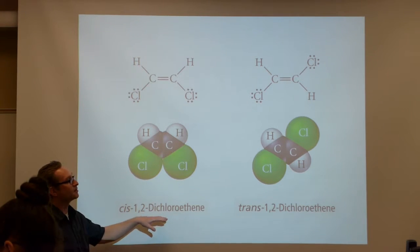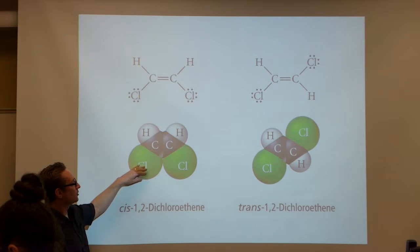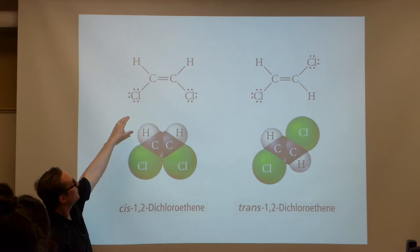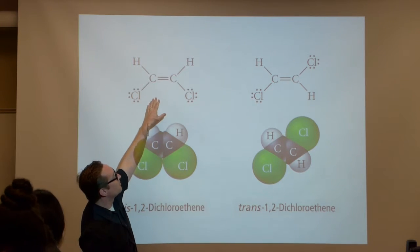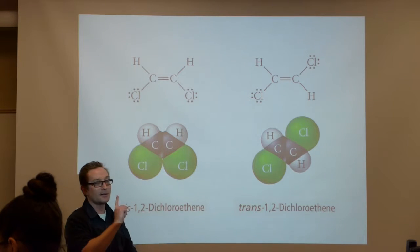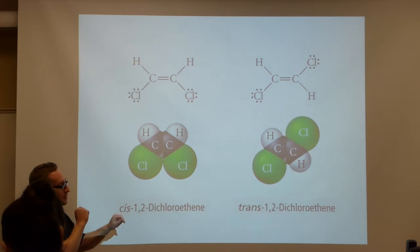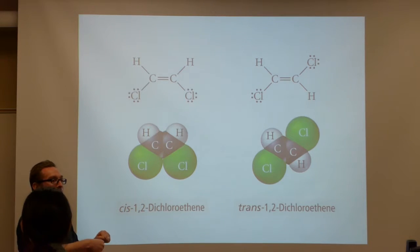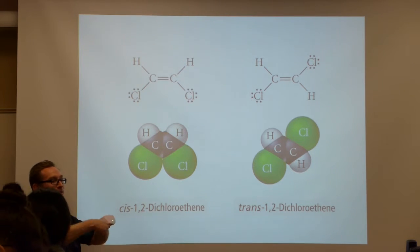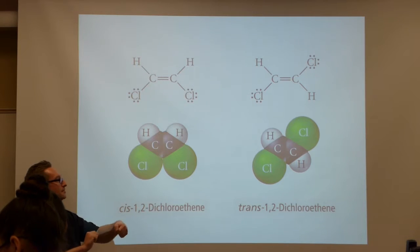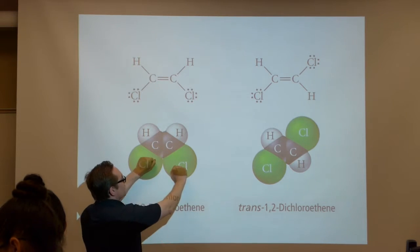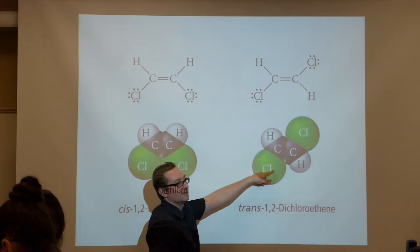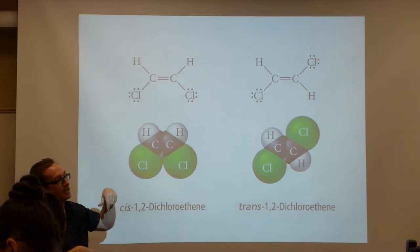These are cis and trans isomers of dichloroethene, and you can see you've got a double bond in both of them. So you've got one pi bond in both of these. These two compounds are completely different compounds because of that pi bond in the center. You cannot rotate that double bond to make these two the same. I can't turn this upside down and make that because of the pi bond in that double bond.